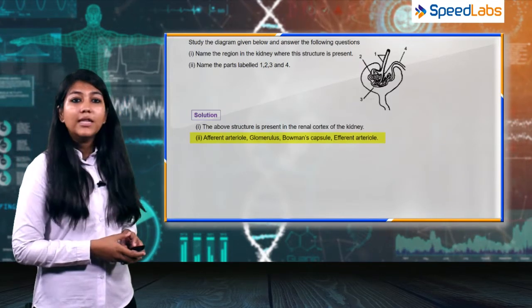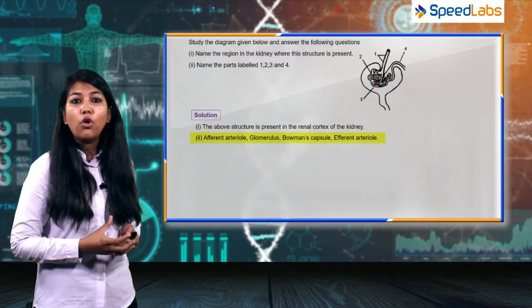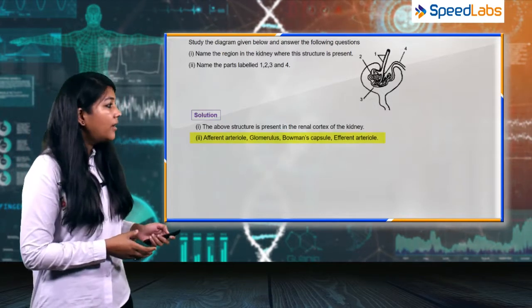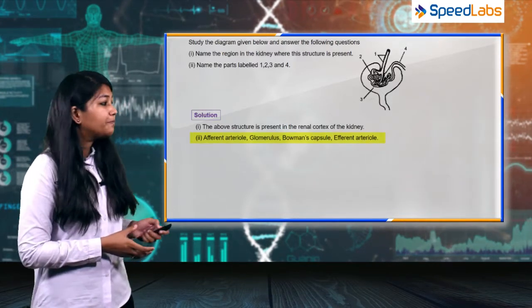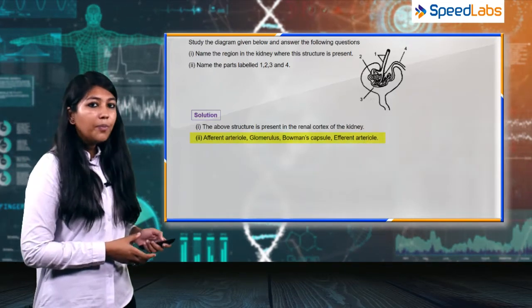The second is the glomerulus, which is the tuft of capillaries. The third is the Bowman's capsule, and the fourth is the efferent arteriole.